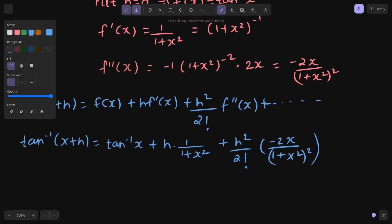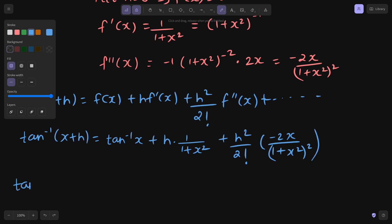Let us simplify this a bit. So tan inverse of x plus h equals tan inverse x plus h upon 1 plus x square plus h square upon 2 factorial is 2, so I can cancel that 2. Minus will come in front, h square x by 1 plus x square power 2, plus more terms.